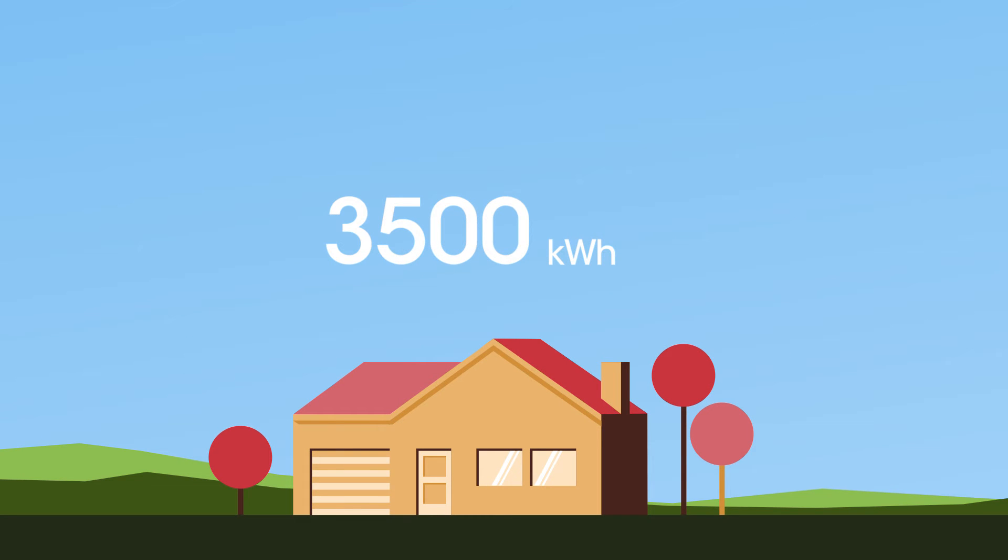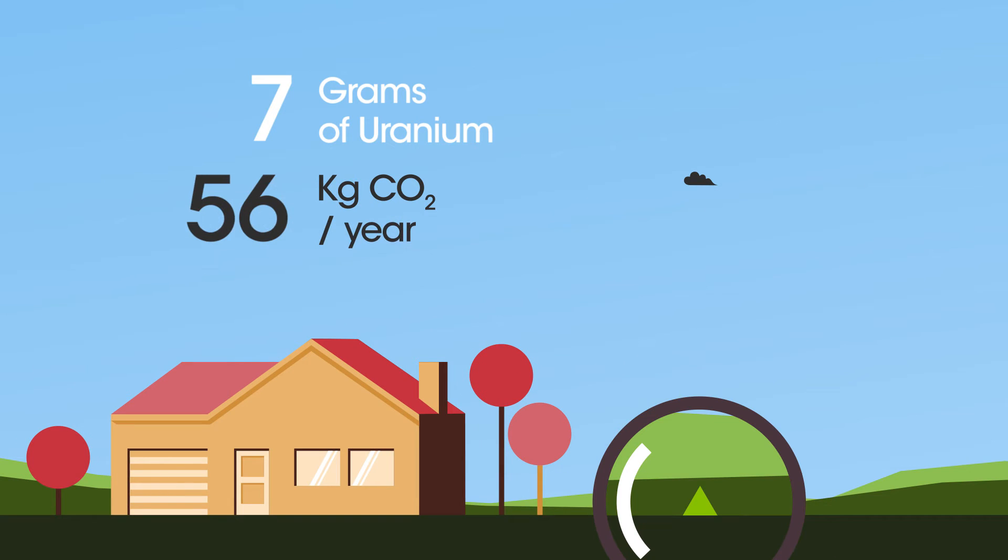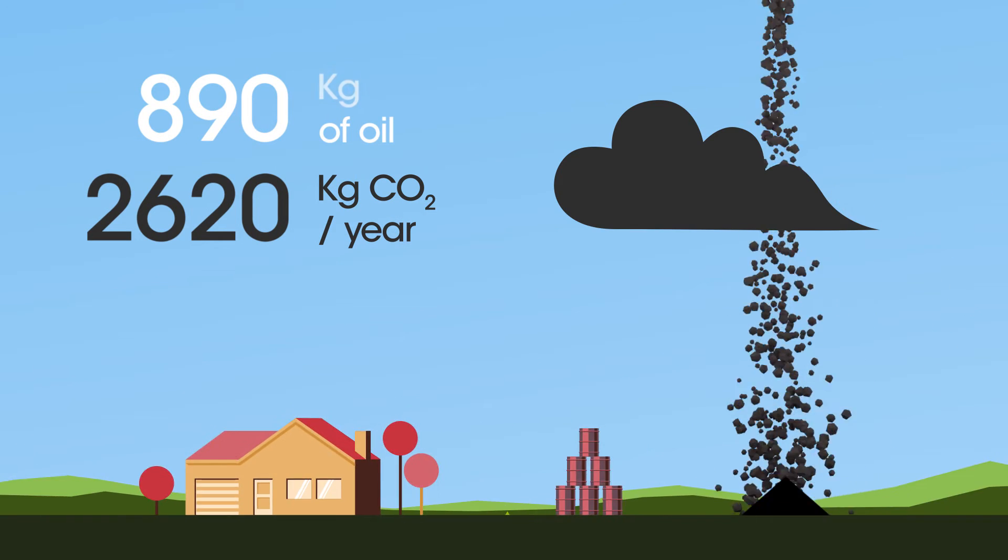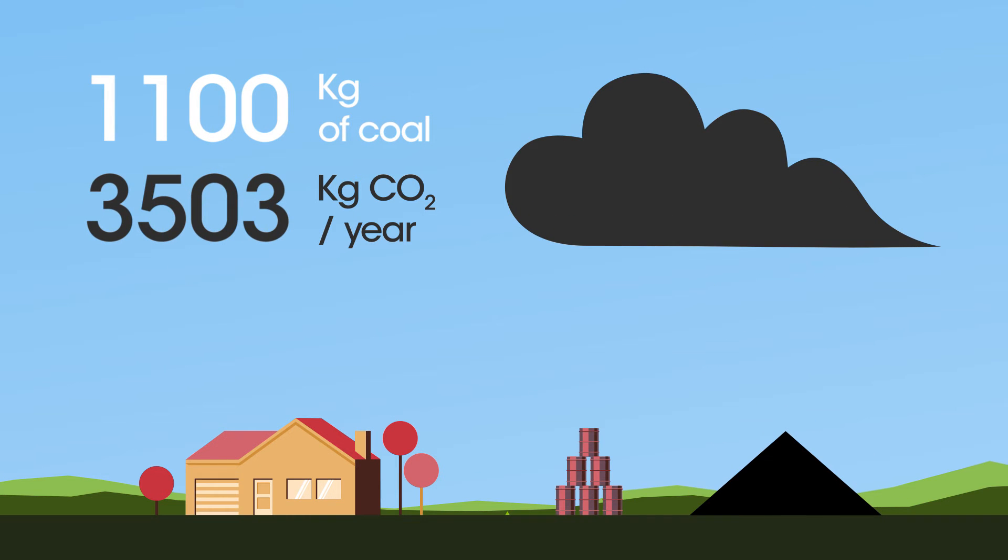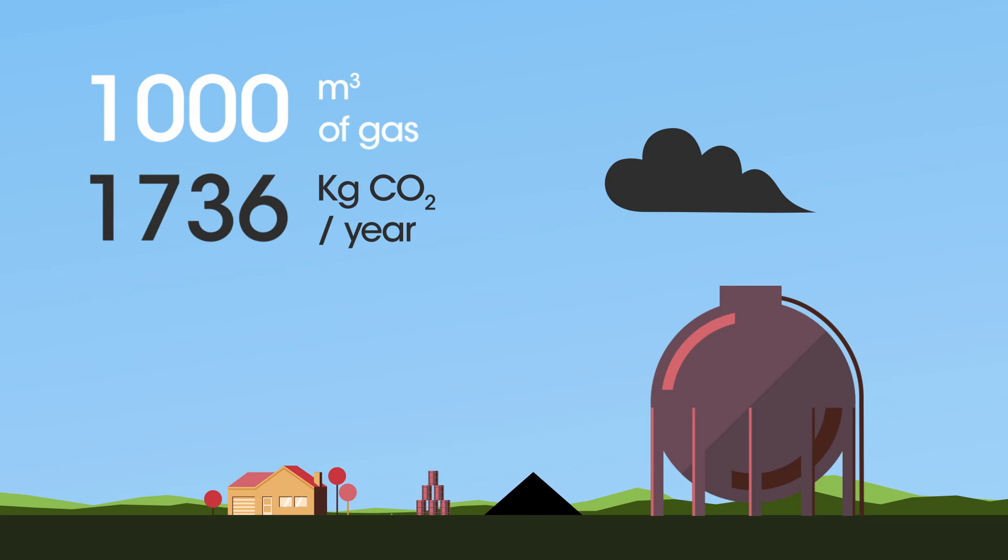To supply an average household for a year, we would need 7 grams of uranium, or 890 kilograms of oil, or 1,100 kilograms of coal, or 1,000 cubic meters of gas.